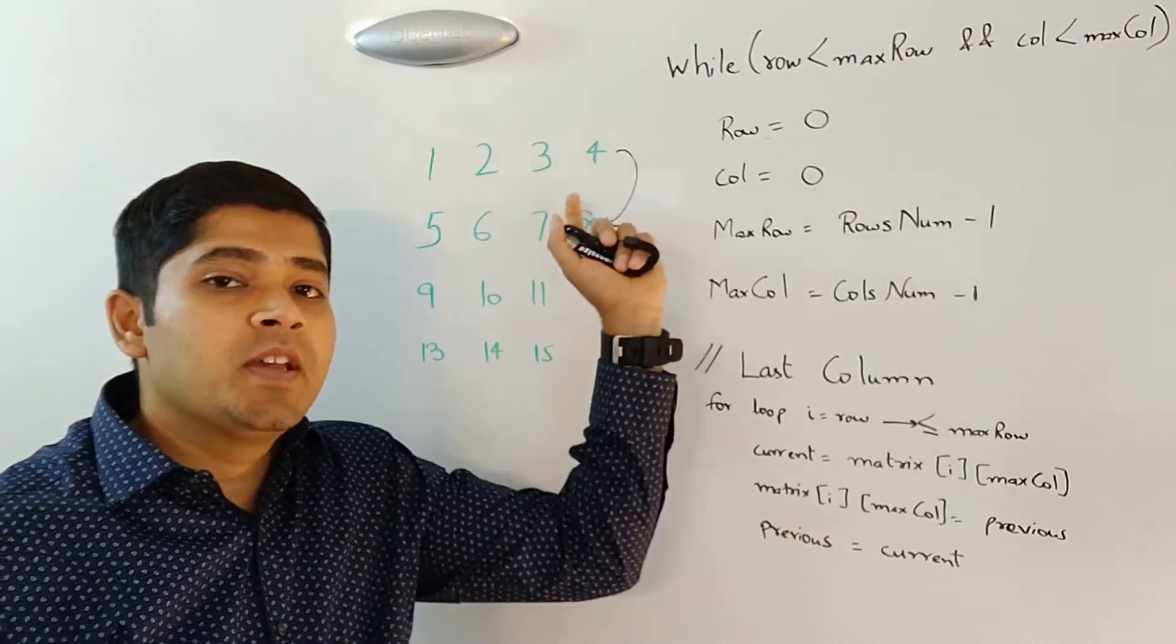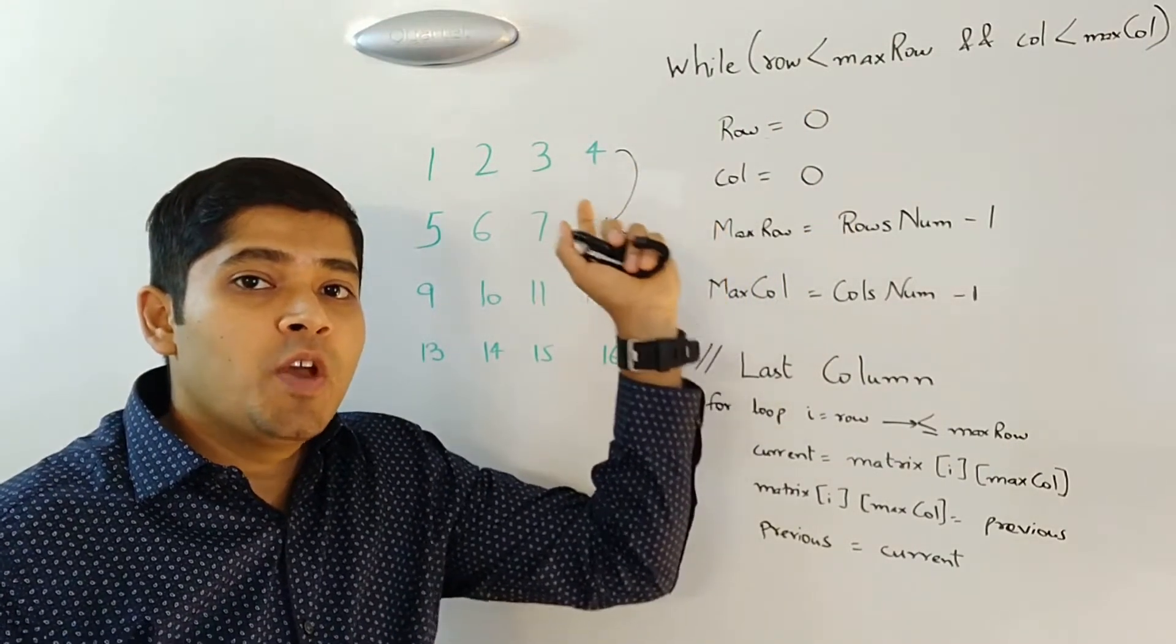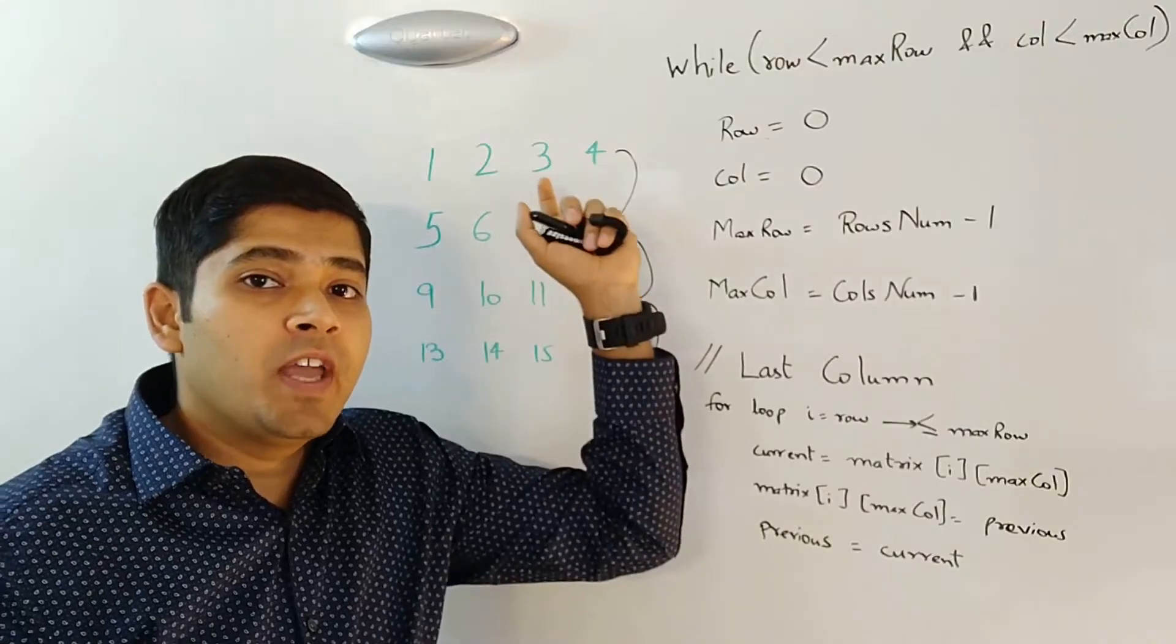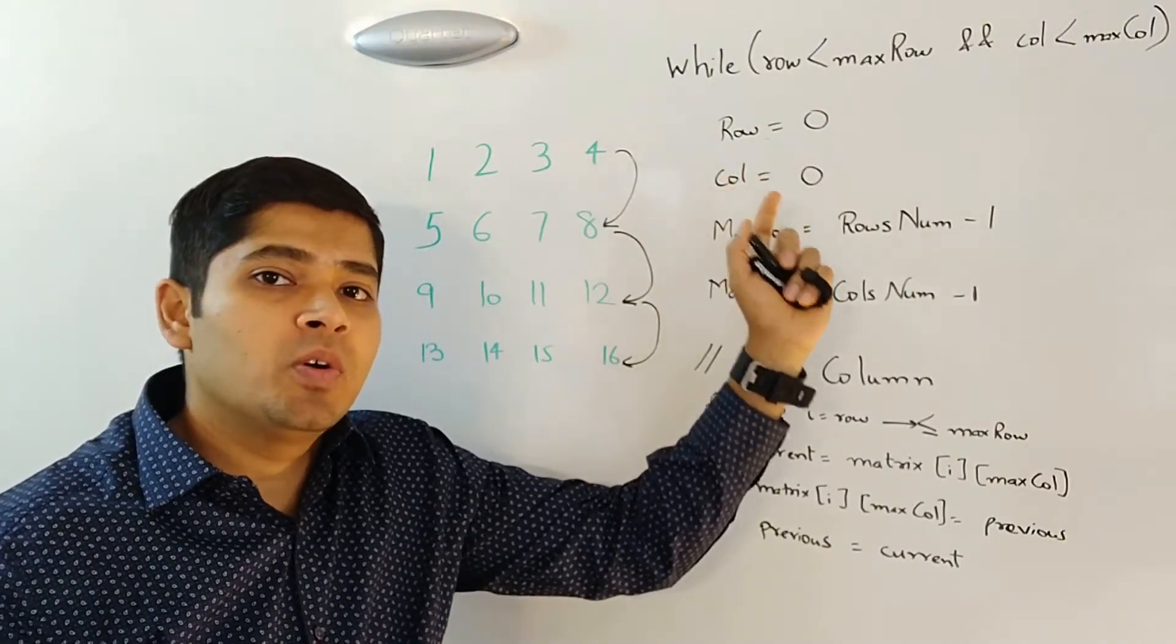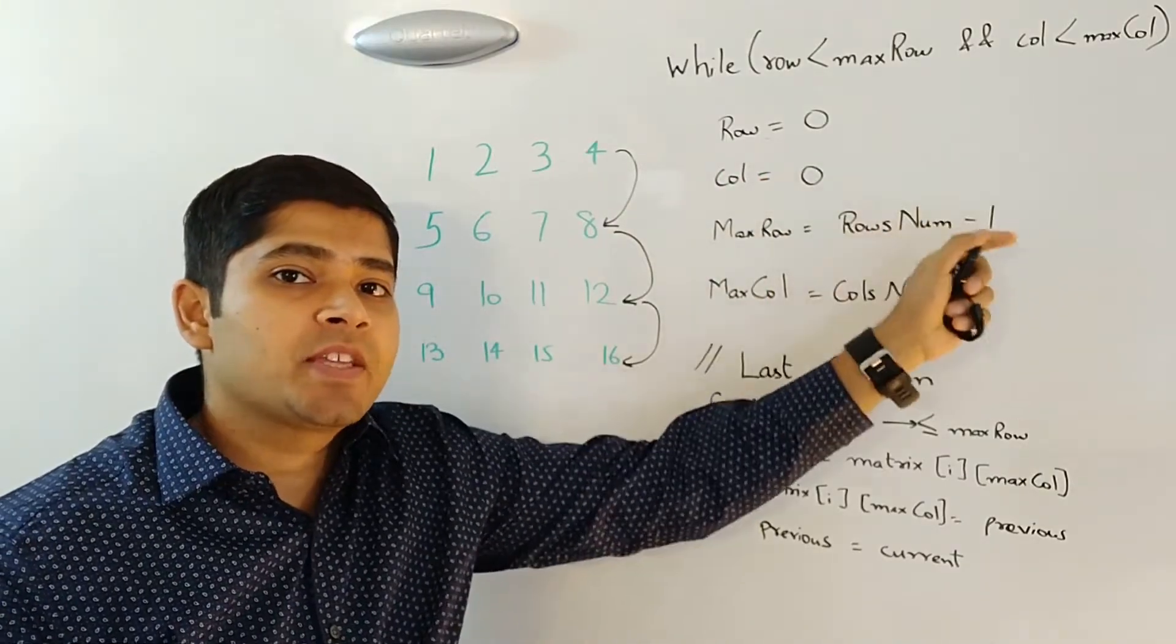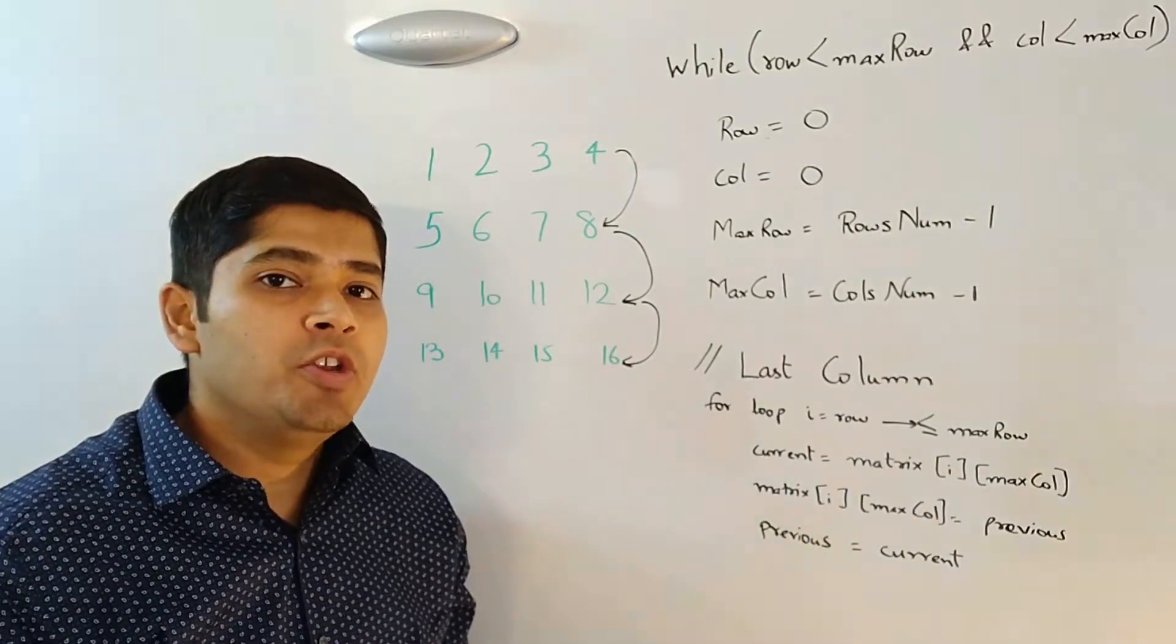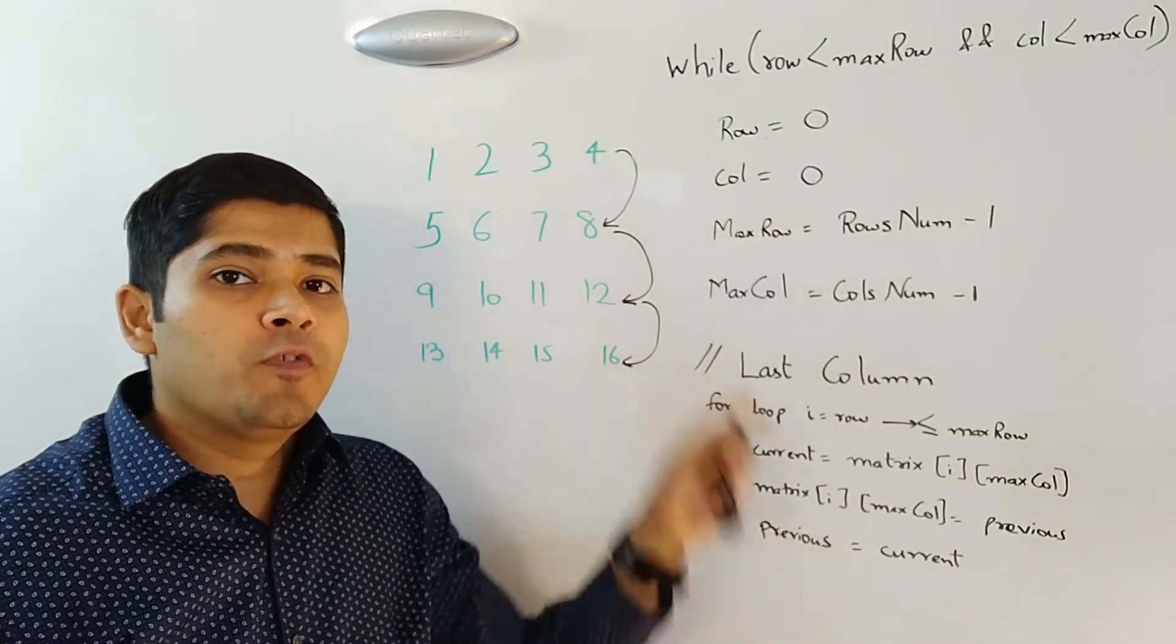what we can do is we can write a little bit more generic approach. We can just check for while row is less than max row and column is less than max column, we keep on continuing our four for loops.